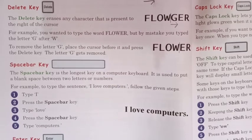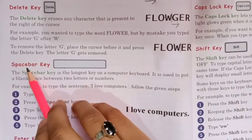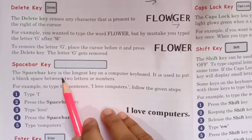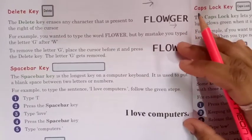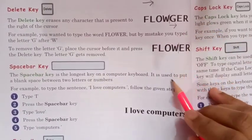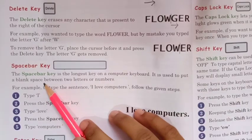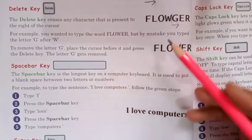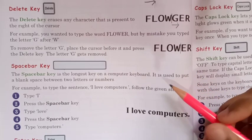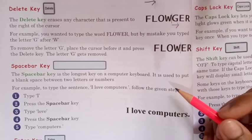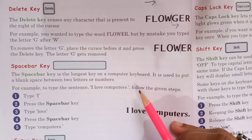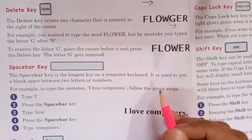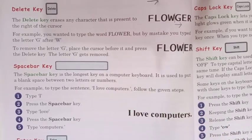The next key is the space bar key. The space bar key is the longest key on the keyboard. It is used to put a blank space between two letters or numbers. When we write a sentence, we leave a space between each word.